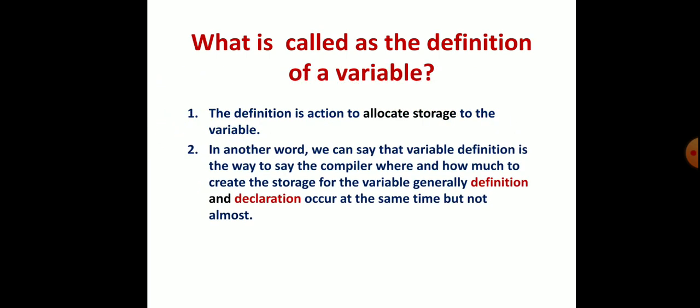In another word, we can say that the variable definition is the way to tell the compiler where and how much to store for the particular variable, and how much to allocate the storage for the variable for declaration before using it in the program.